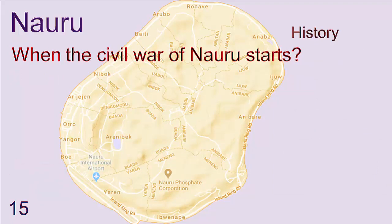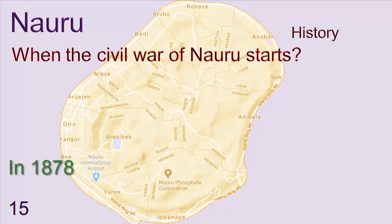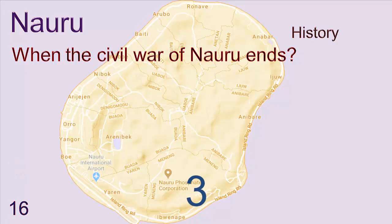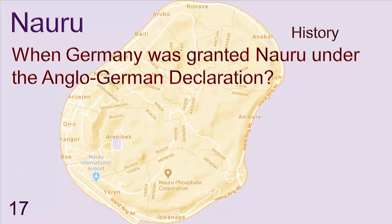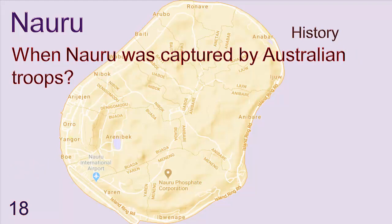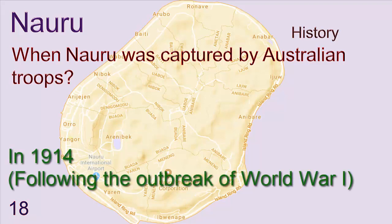When did the Civil War of Nauru start? In 1878. When did the Civil War of Nauru end? In 1888. When was Germany granted Nauru under the Anglo-German Declaration? In 1886. When was Nauru captured by Australian troops? In 1914, following the outbreak of the First World War.